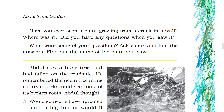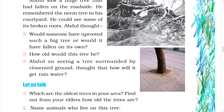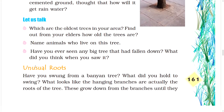Abdul saw a huge tree that had fallen on the roadside. He remembered the neem tree in his courtyard. He could see some of the tree's broken roots. Abdul thought: would someone have uprooted such a big tree, or would it have fallen on its own? Abdul also saw a tree surrounded by cemented ground and thought about how it would get rainwater.